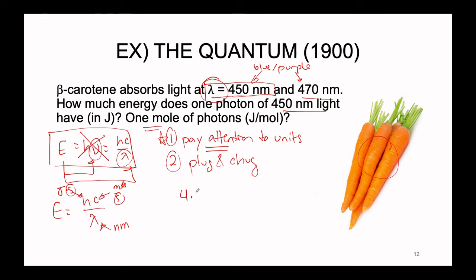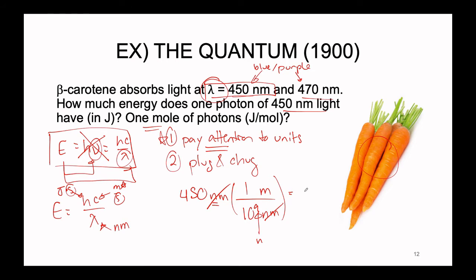The 450 nanometer wavelength needs to be converted into meters. The metric prefix nano means there are 10 to the 9 nanometers in one meter. A useful mnemonic: nano starts with an N, and the number 9 also starts with an N — so nano means 10 to the 9 of whatever unit you're working with. Taking 450 divided by 10 to the 9, nanometers cancel out, and we're left with 4.50 times 10 to the negative 7 meters.